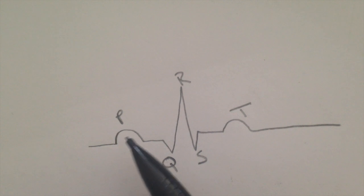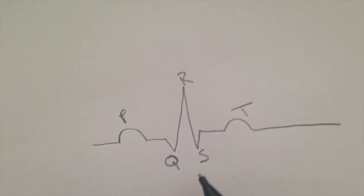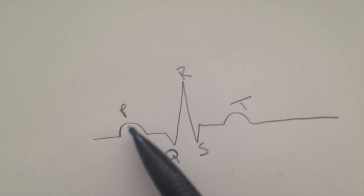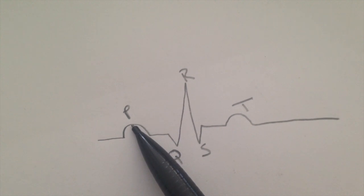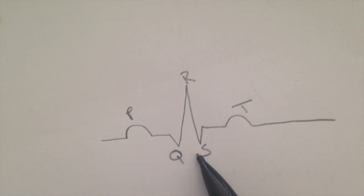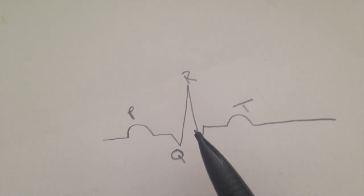It looks something like this. Here we see the P wave followed by the QRS complex, finally ending with the T wave. The P wave represents atrial depolarization and usually atrial contraction. The QRS deflection represents ventricular depolarization and usually ventricular contraction. It is important to note that electrical activity seen on an ECG does not necessarily correlate with cardiac activity. Therefore, you must always check your patient's pulse.